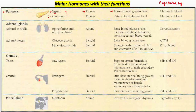Aapke blood mein glucose ki kitni maantra hai, woh nirdharit karayi ki kitna aur kab insulin release hoga pancreas ke beta cells se. Second is glucagon, jo pancreas ke alpha cells se release hota hai. Insulin and glucagon dono antagonist way mein kaam karte hain. Glucagon bhi ek protein hai jo ki body mein blood mein basically blood glucose level raise karta hai.